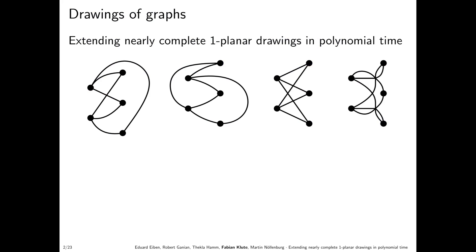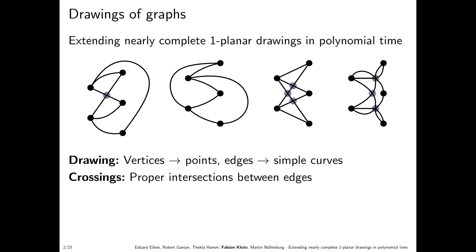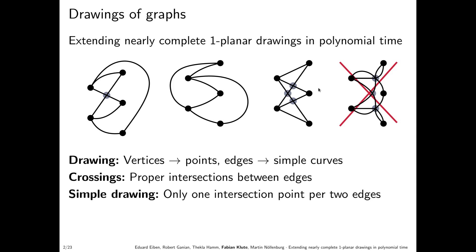Let's start by defining what we have to work with. First, drawings of graphs: we see four drawings, and for us, drawings of graphs are just mappings of vertices to points and edges to simple curves. Crossings are proper intersections between edges. A simple drawing is one where edges intersect at most once — either in a crossing or at an incident vertex. The rightmost drawing is not a simple drawing, and we will not deal with these.